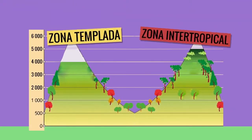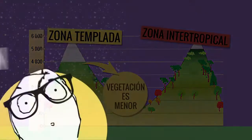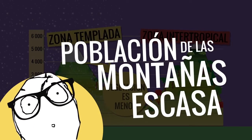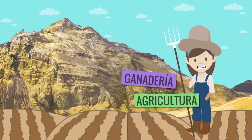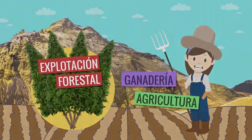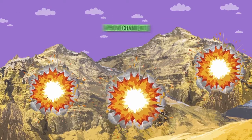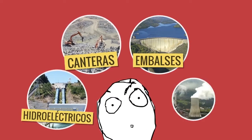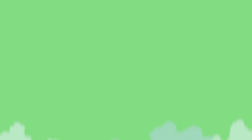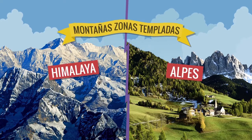Resumiendo estas dos zonas: en las zonas templadas hay más nieve y frío que en las zonas intertropicales, y por eso también la vegetación es menor. Aquí la población de las montañas es escasa y se dedican a la ganadería, agricultura y explotación forestal. Pero en las últimas décadas las cosas se han alterado bastante, debido al aprovechamiento de recursos minerales y energéticos. Por estos motivos se han abierto canteras, se han construido embalses y centrales hidroeléctricas y térmicas. Además, el turismo y los complejos deportivos han terminado originando un fuerte impacto ambiental. Ejemplos claros de montañas de zonas templadas son los Alpes y el Himalaya.